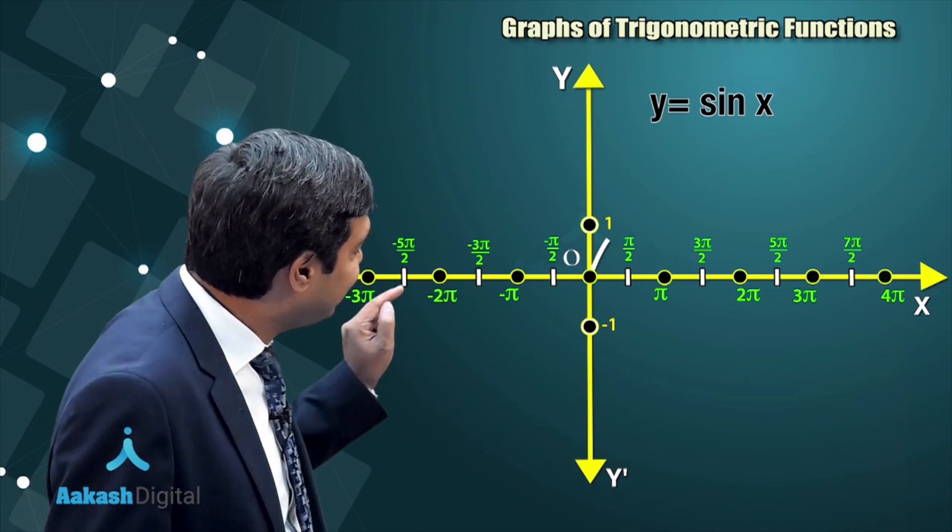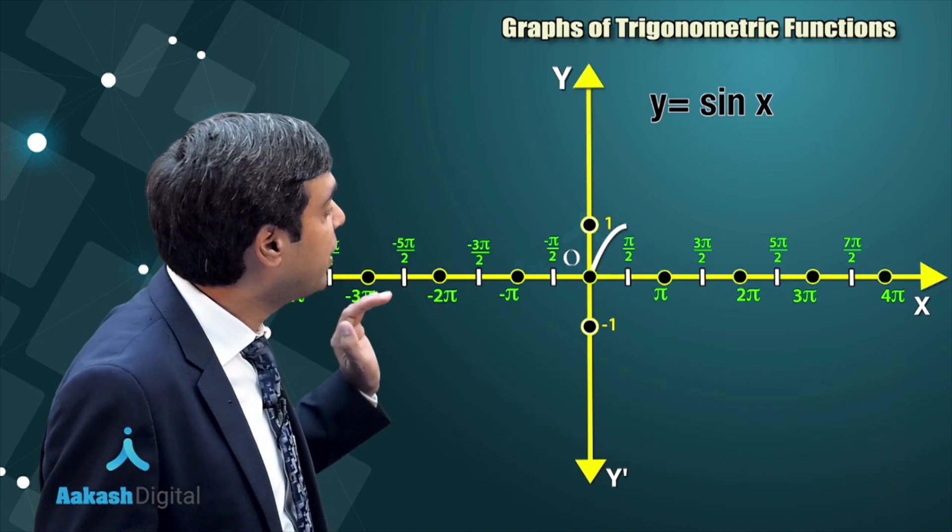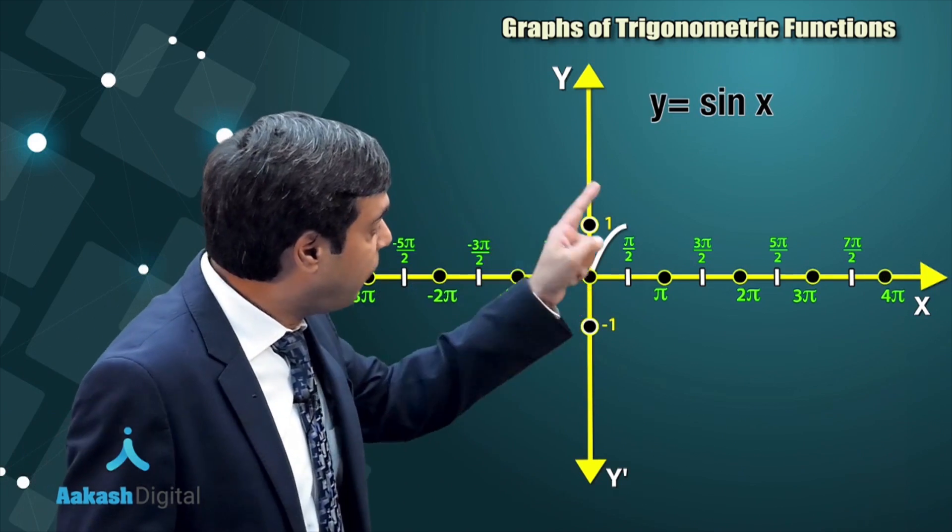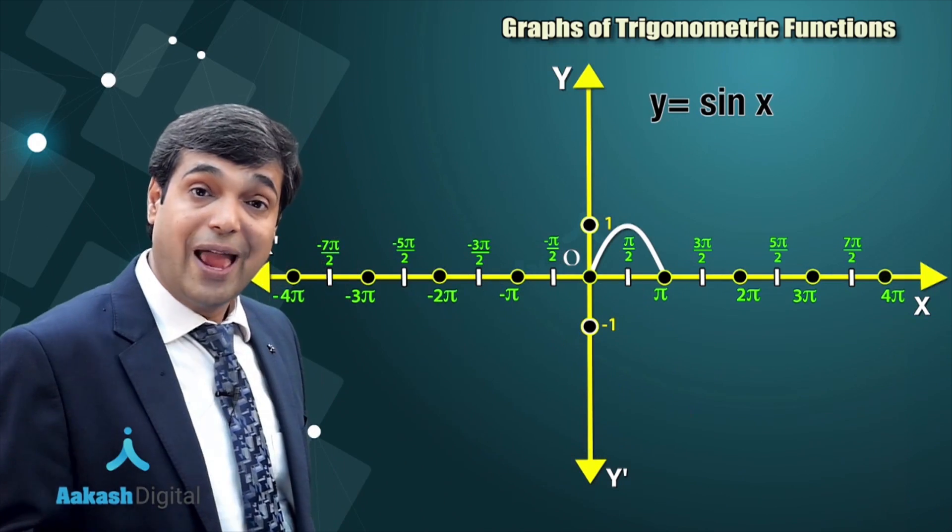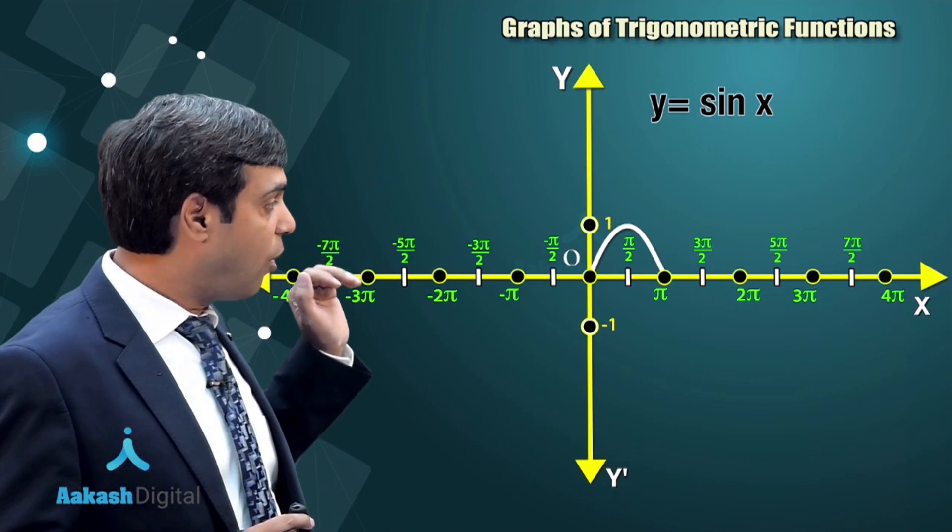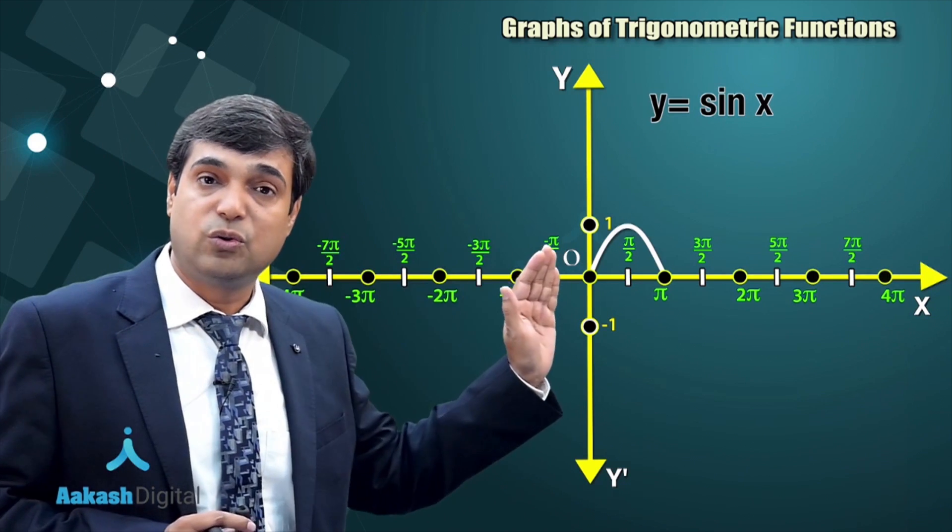So let's draw it. From 0 to pi/2, it is moving from 0 to 1. Then it goes down from 1 to 0 as x is approaching to pi. So we can see the trace of sine in the interval 0 to pi.